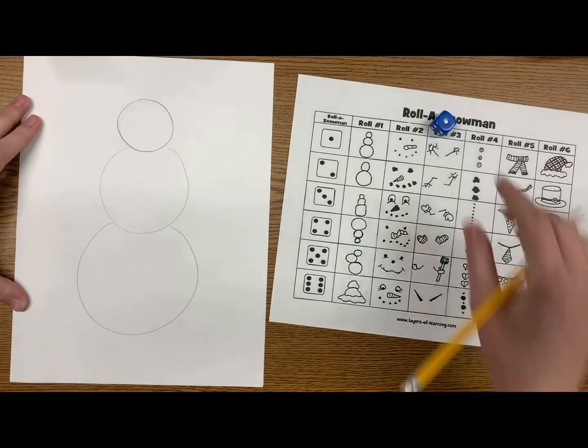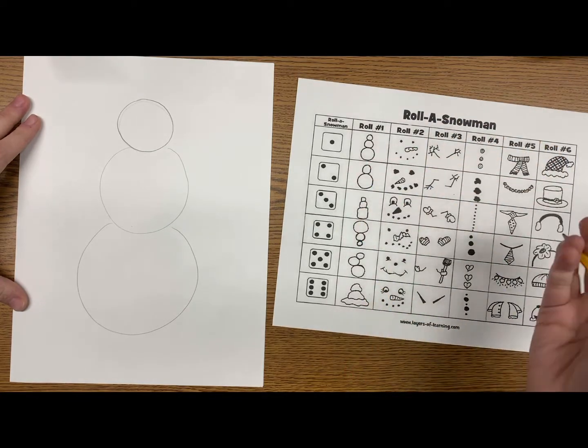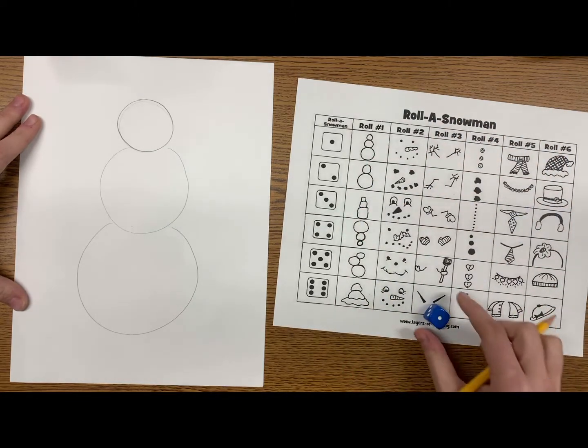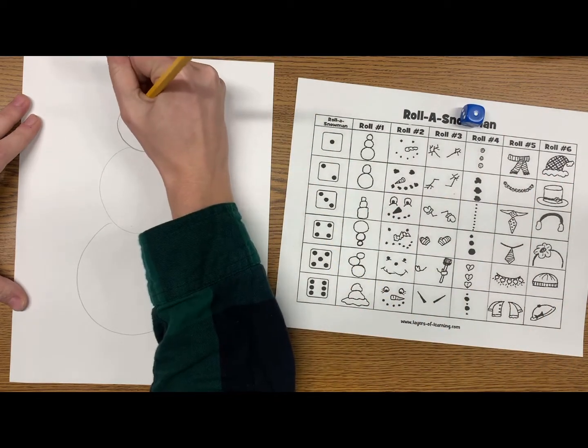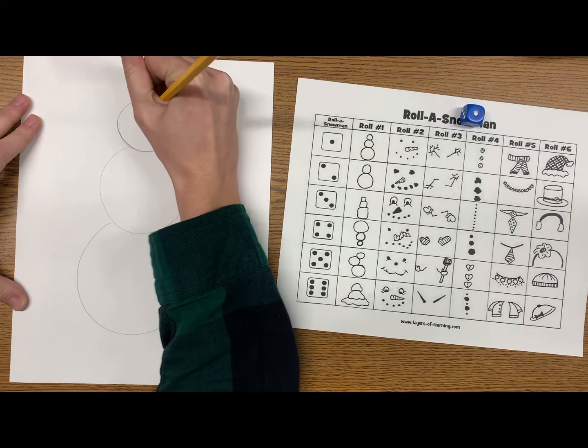Then I'm going to move on to the second category for my next roll. This is the faces. So when I roll, it looks like I got one again. So I'm going to draw the first face, the face that goes with the number one roll.